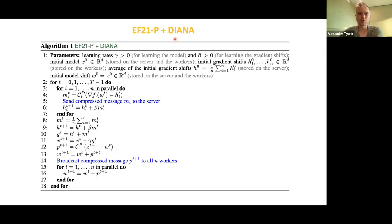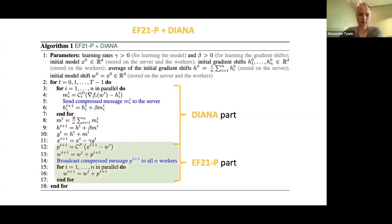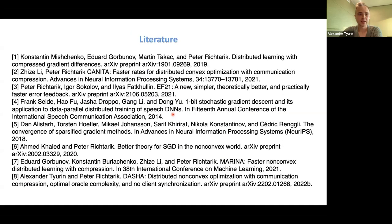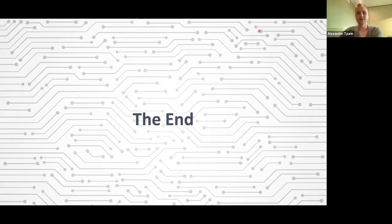Returning to EF21P plus Diana: the algorithm consists of two parts — a Diana part and an EF21P part. The difference from original Diana is that Diana simply takes X_{t+1} and broadcasts it to workers, whereas here we apply the EF21P mechanism instead. This is essentially the recursion from the previous slide. This method works well and is the first bidirectional method that provably improves upon vanilla gradient descent. That concludes the presentation.